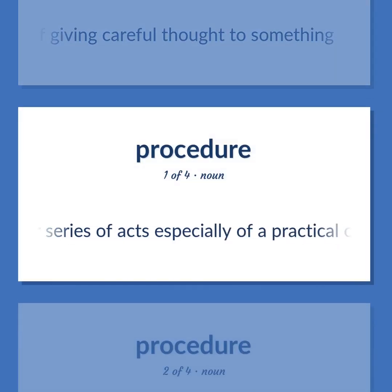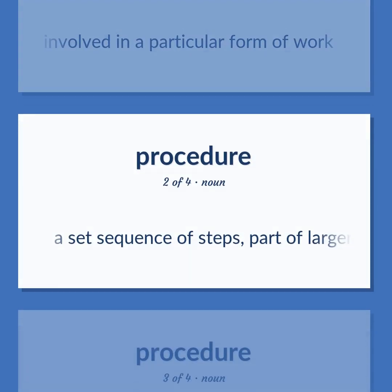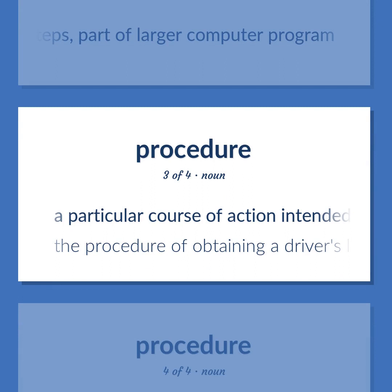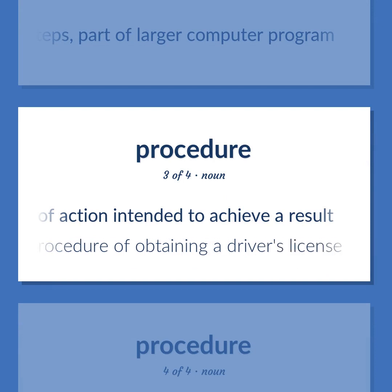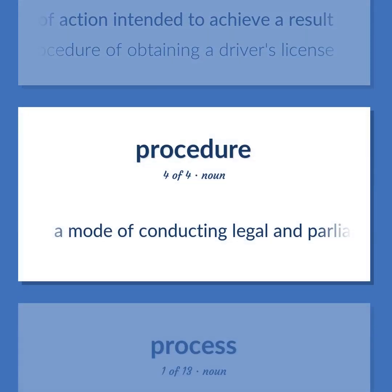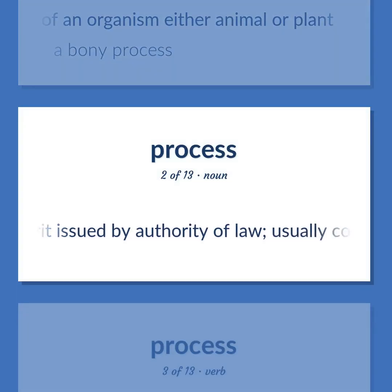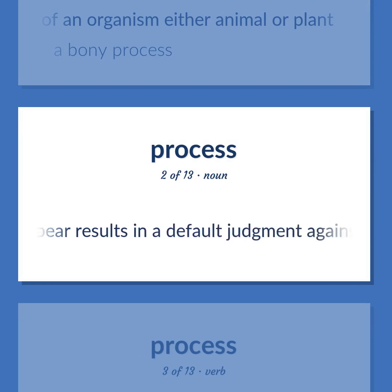Process: a process or series of acts especially of a practical or mechanical nature involved in a particular form of work. A set sequence of steps, part of a larger computer program. A particular course of action intended to achieve a result — 'The procedure of obtaining a driver's license.' A mode of conducting legal and parliamentary proceedings. A natural prolongation or projection from a part of an organism, either animal or plant — 'A bony process.' A writ issued by authority of law — usually compels the defendant's attendance in a civil suit; failure to appear results in a default judgment against the defendant.